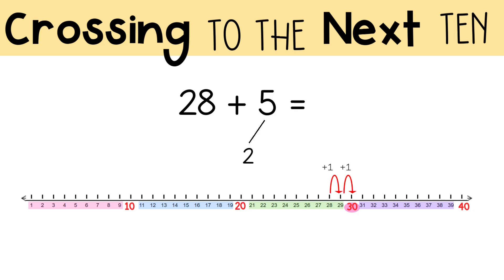You were supposed to add 5 and you only added 2, so you need to add 3 more. 30 plus 3 equals 33. So 28 plus 5 equals 33. We crossed to the next 10 because we went from numbers in the 20s to numbers in the 30s when we crossed over 30.